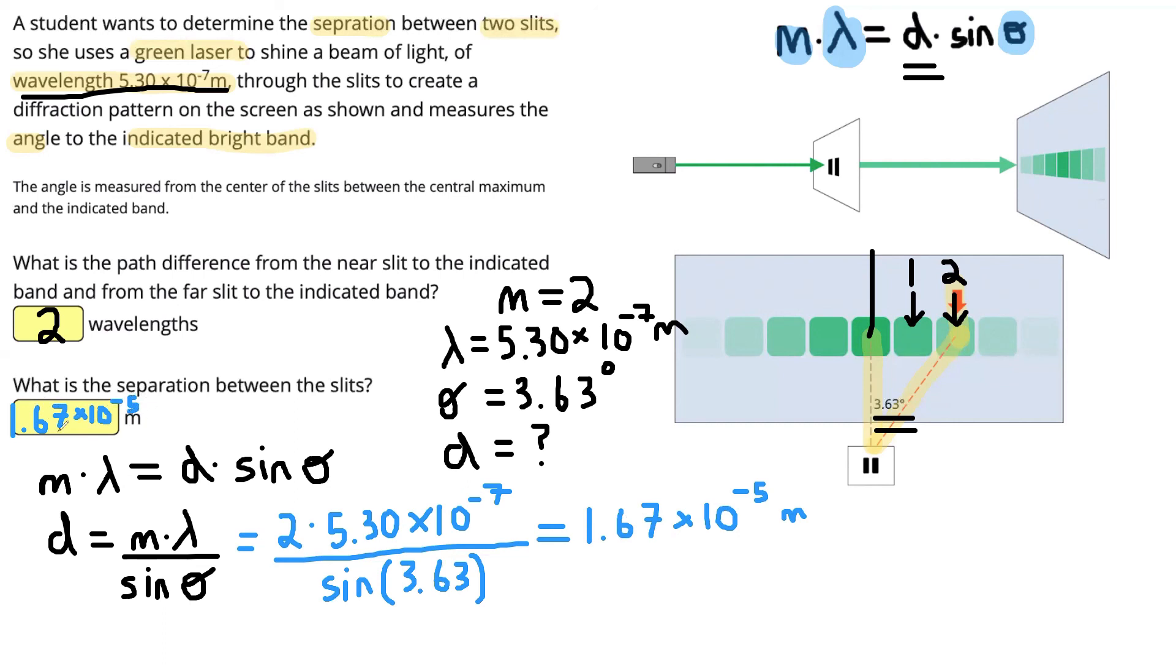Remember, when you put those numbers in positive physics on the website, you're using the E notation. So instead of times 10 to the power of, you can just write the letter E. So this would look like 1.67 E negative 5.